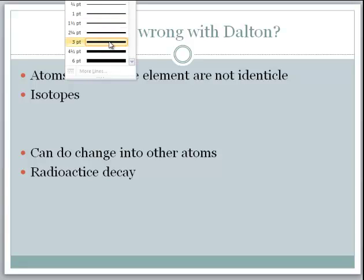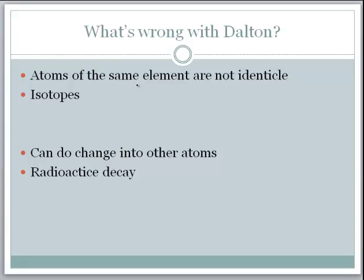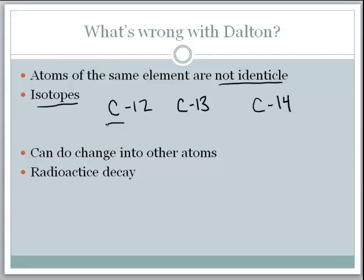Let's talk about what is wrong with Dalton's atomic theory. We know that atoms of the same element are not identical, because of isotopes. An isotope consists of the same type of atom with different masses. Carbon, for example, has three main isotopes: carbon-12, carbon-13, and carbon-14. They differ by the number of neutrons, but they're all still carbon and behave the same chemically. So we know that part of Dalton's atomic theory is not exactly true.